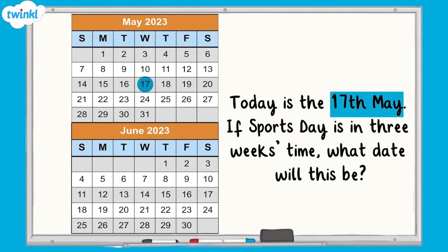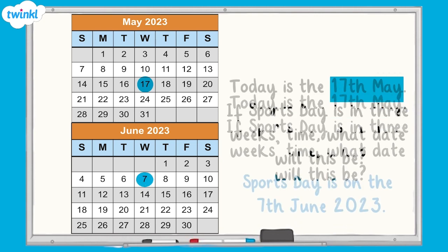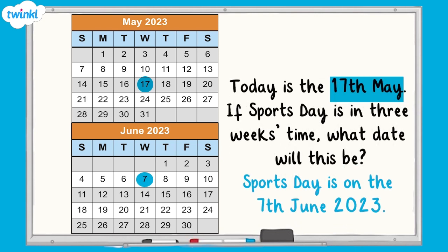Take a look at this question. Today is the 17th of May. If sports day is in three weeks time, what date will this be? Starting on the 17th of May, we count on three weeks. One week after the 17th of May is the 24th of May. Two weeks after is the 31st of May. Three weeks after the 17th of May is the 7th of June, so sports day is on the 7th of June.